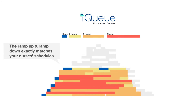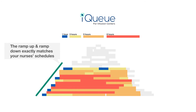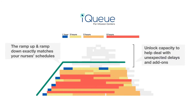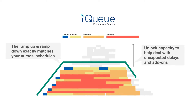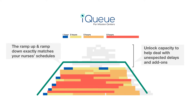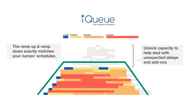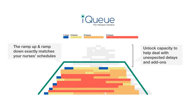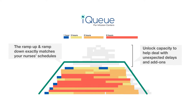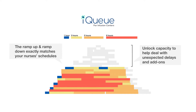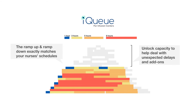The result? Utilization ramps up smoothly, stays flat for most of the day, and ramps down smoothly at the end of the day. It keeps the staff productively deployed while minimizing overtime or big swings in the workload from hour to hour. Finally, your nurses get a chance to take their lunch break.